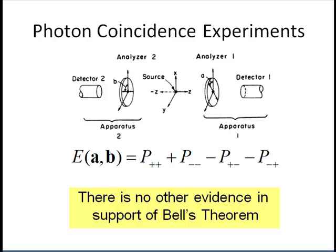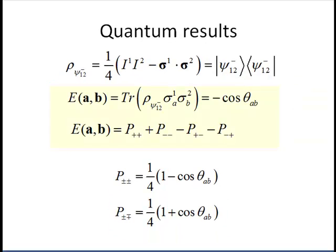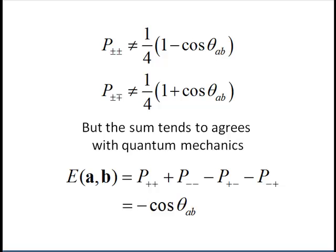Let's look at the results from quantum mechanics. It is obtained from the density operator that describes an entangled singlet. It is the outer product of the usual singlet state, and it is straightforward to calculate the well-known results for the correlation and the coincidences to give the usual minus cosine theta and the expressions for the coincidences. But it appears that the experimental data suggests that the coincidences do not agree with quantum mechanics, even though in the sum these anomalies tend to cancel.